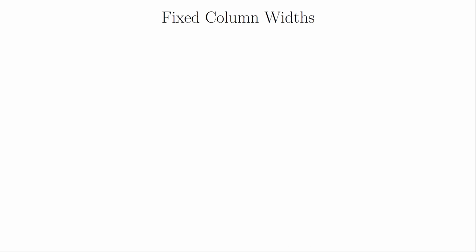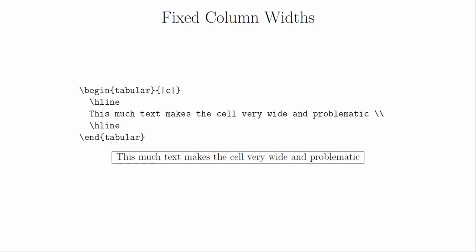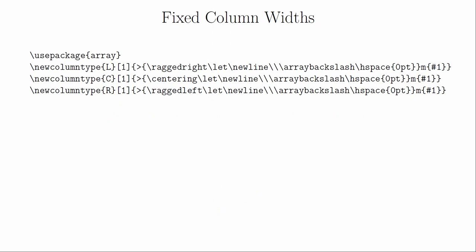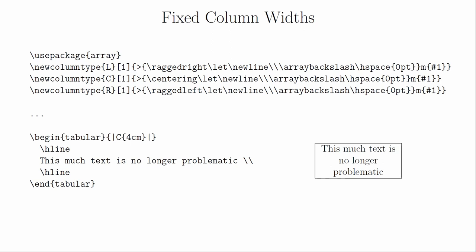One thing you might have noticed about the tabular environment is that LaTeX decides how wide to make the columns. There are times when you want to control the column width — for example, if you have lots of text to put into a cell, a fixed column width will cause the text to wrap instead of stretching out the columns. One solution for this uses the array package and some custom column types. Once you've typed in these commands, all you need to do to control the width of a column is use the capital letter in place of the lowercase letter, and enclose the column width inside of curly brackets. You can use several different types of units, but I usually use millimeters or centimeters.